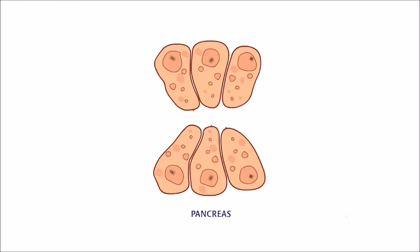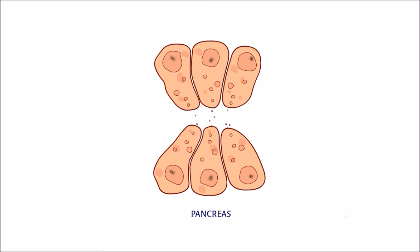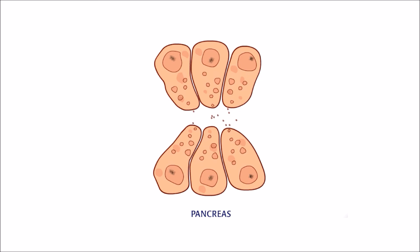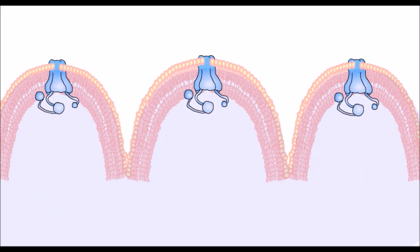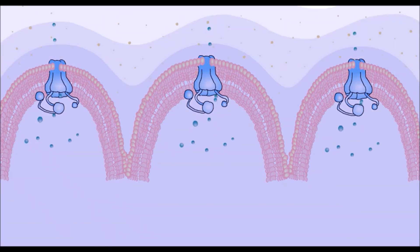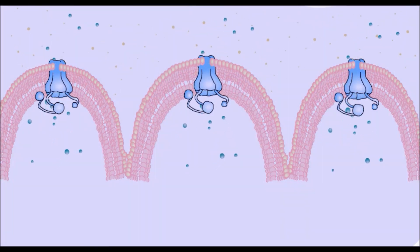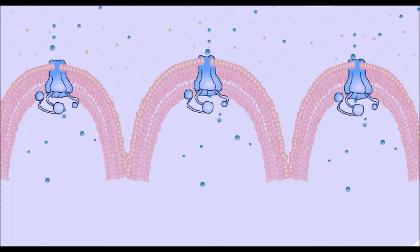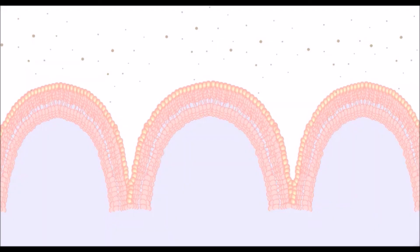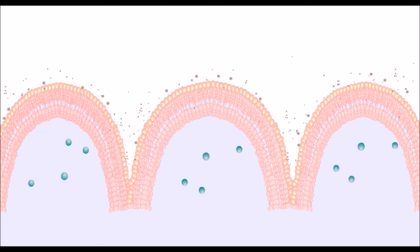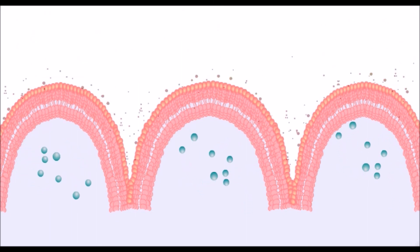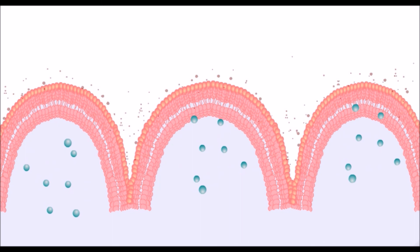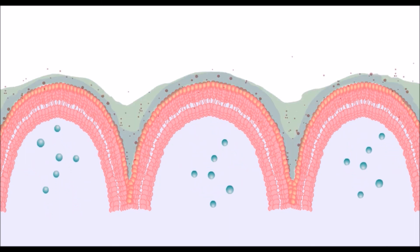CFTR also shuttles chloride ions in other organs, including the pancreas, where it ultimately prevents digestive enzymes from reaching the intestine. The chloride-pumping action of CFTR causes water to follow the chloride into the duct, where the watery slurry flows out of the duct and into the intestine carrying the enzymes. When CFTR is missing, there is no slurry to carry the enzymes away, so the enzymes begin to digest the pancreas itself, leading to inflammation.